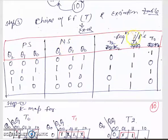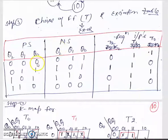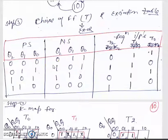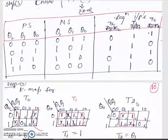The excitation table has present state, next state, and required inputs T0, T1 and T2. Because the T flip-flop works on XOR logic: whenever the present state and next state are different, the T input is 1; when they are the same, T input is 0. For example, Q0 transitioning 0→1 gives T=1, and 0→0 gives T=0. We fill the entire excitation table using this concept.